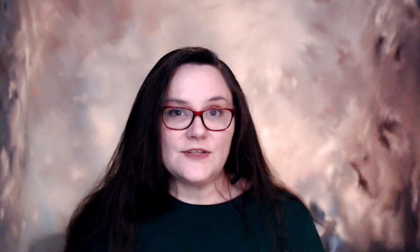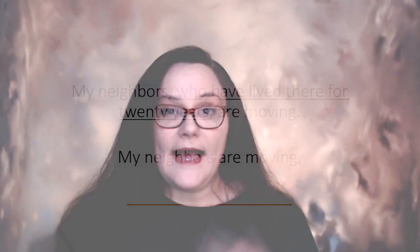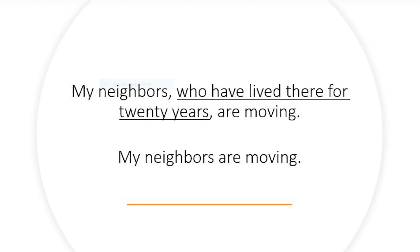Non-essential information means you do not need the information in the clause in order to understand the sentence. For example: my neighbors, who have lived there for 20 years, are moving. I don't need to know how long they've lived there to understand 'my neighbors are moving,' so I separate that clause out with commas. It's important that you put both commas — you cannot use just one. Another example: my friend Nancy, who works at the university, is coming over for dinner. I separate out all non-essential information.